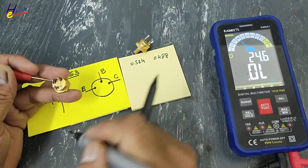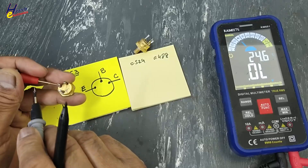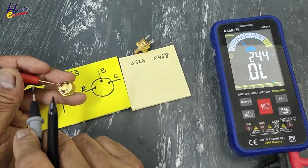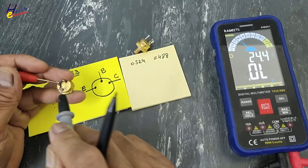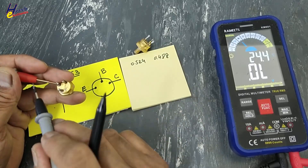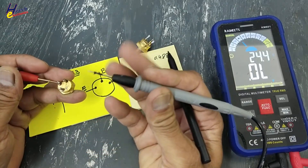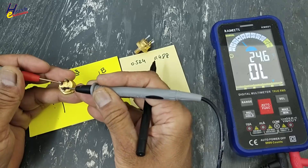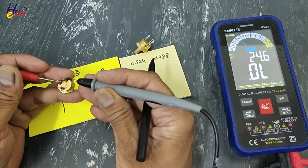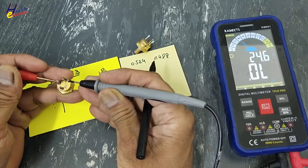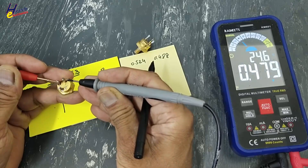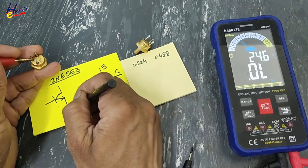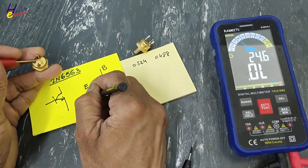What is the type of this transistor? We have the red lead as common, meaning red is positive — P for positive. Black is negative — N for negative. So: N-P-N — collector N, emitter N, base P. It is an NPN transistor.